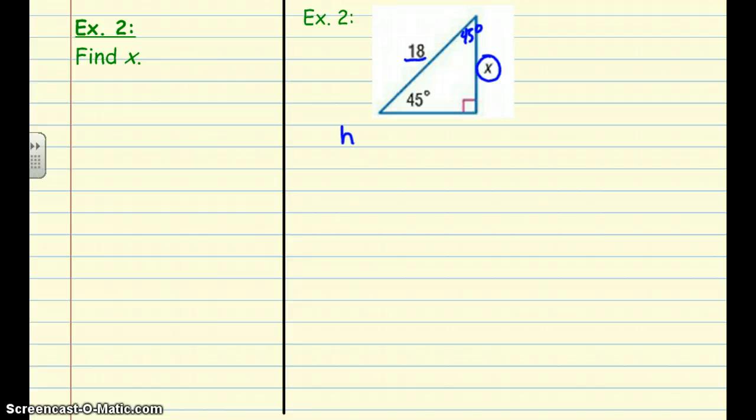By that theorem, we know the hypotenuse is the leg times square root of 2. What information do we know? In this case we know the hypotenuse is 18. We don't know the leg, and we have the square root of 2 here.